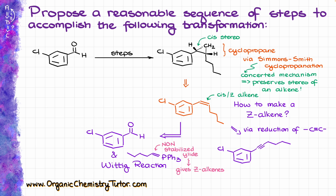Another thing to keep in mind is that non-stabilized ylides, just like the one that we have in this case, give us Z alkenes — and that is precisely what we want in this reaction. Since we have reached our starting material, we can now put everything down into one synthetic scheme and see how the synthesis looks when we put it all together.